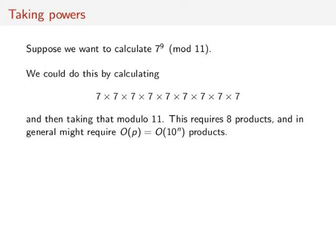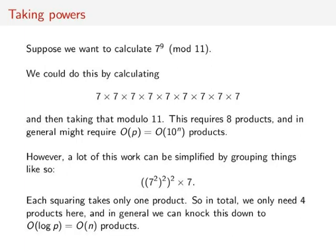And as a result, if we start to try and optimize this, we can actually do it in 4 products: 7 squared (one product), square that (one more product), square that (one more product), and multiply by 7. In general, we can knock this down to big O of log p, or big O of n products.